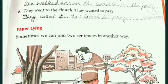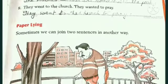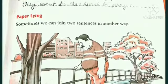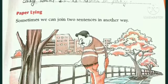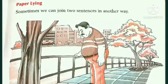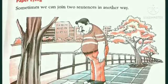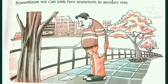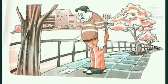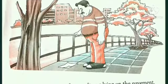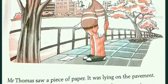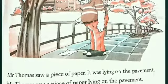For example: 'Mr. Thomas saw a piece of paper. It was lying on the pavement.' These are two sentences. We can combine them into one by removing 'it was' from the second sentence, since 'it was' refers to 'a piece of paper' and we cannot name the same thing twice in one sentence.